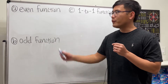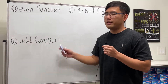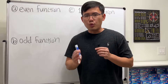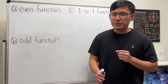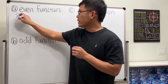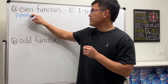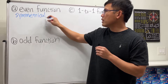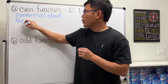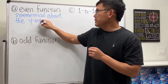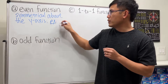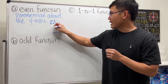Here we will talk about some of the things you should know for an even function, an odd function, and also a one-to-one function. First, for an even function, the graph is always going to be symmetrical about the y-axis. Let me write that down and give you a picture first — of course I will give you our girlfriend, namely the parabola.